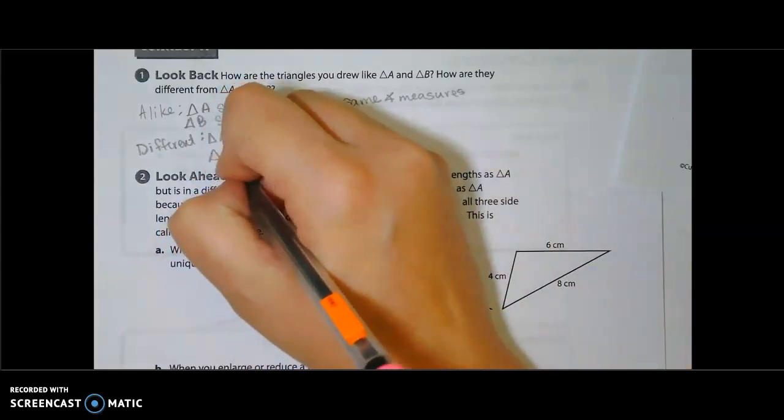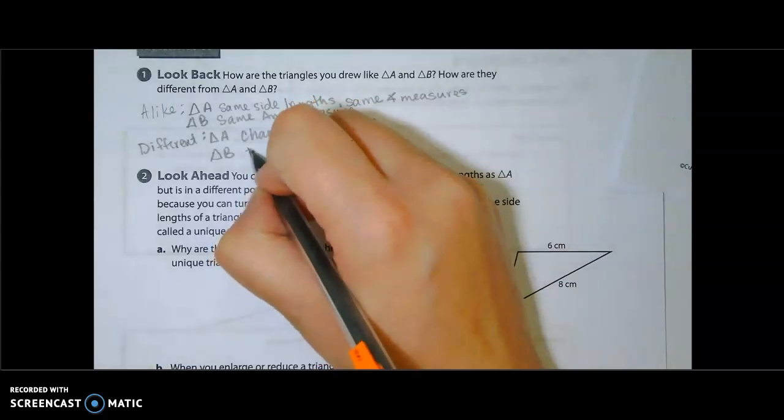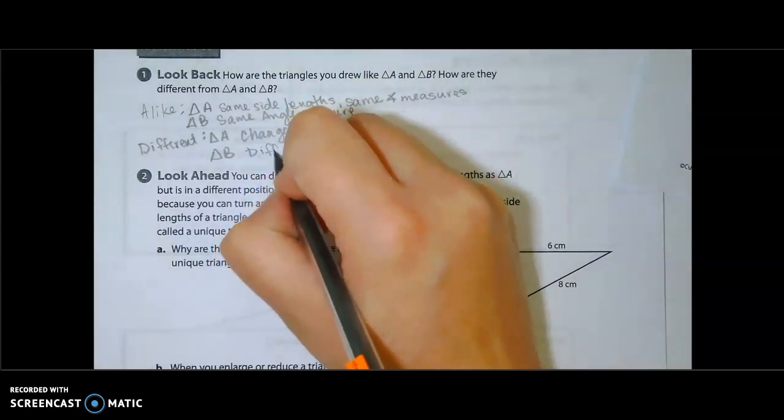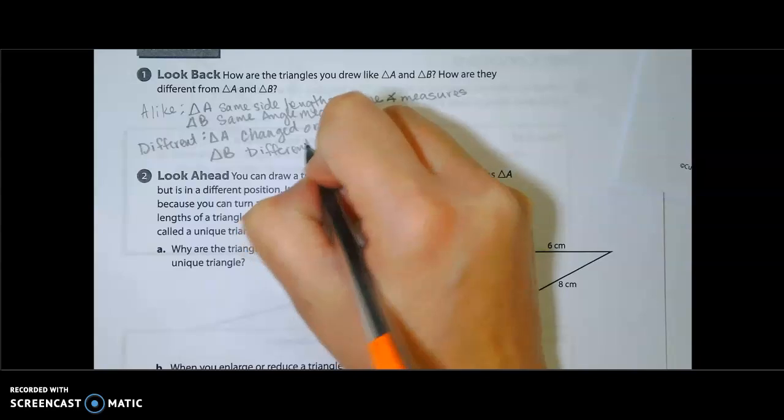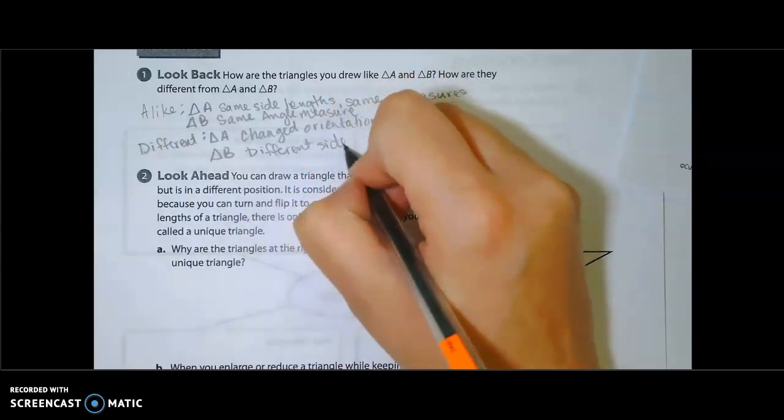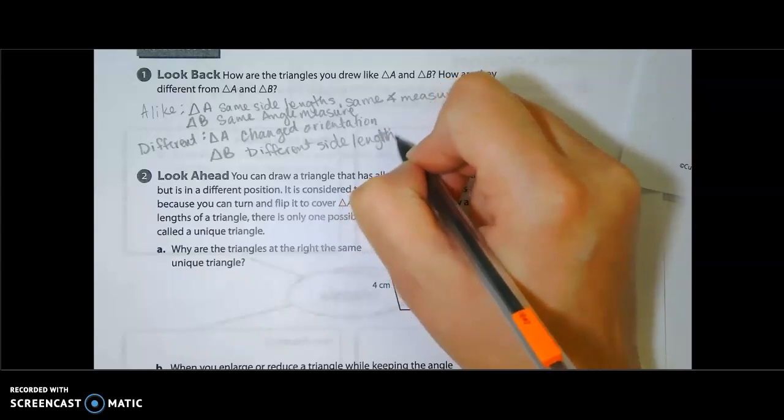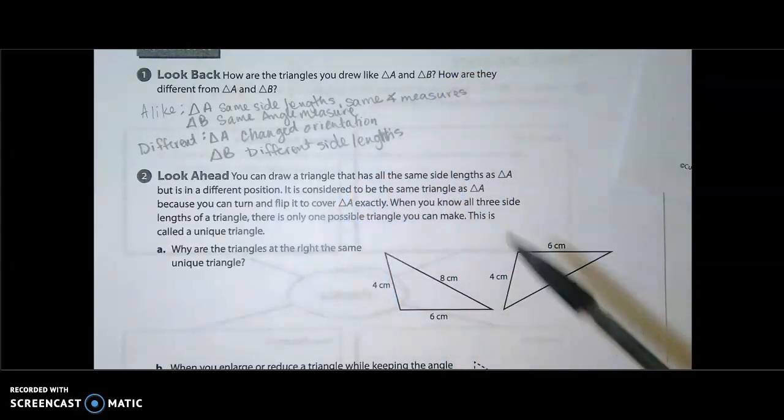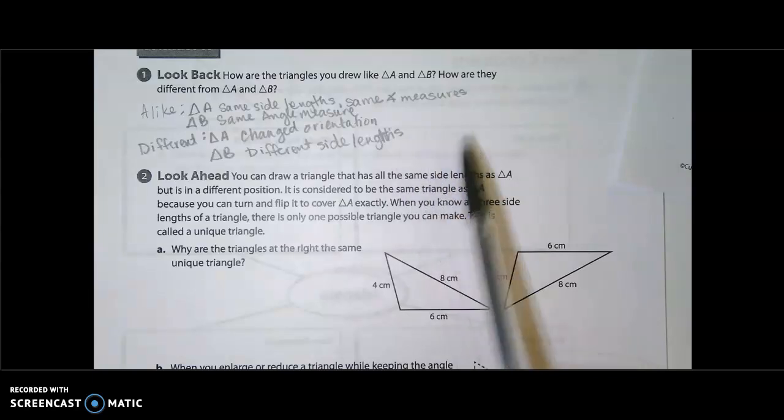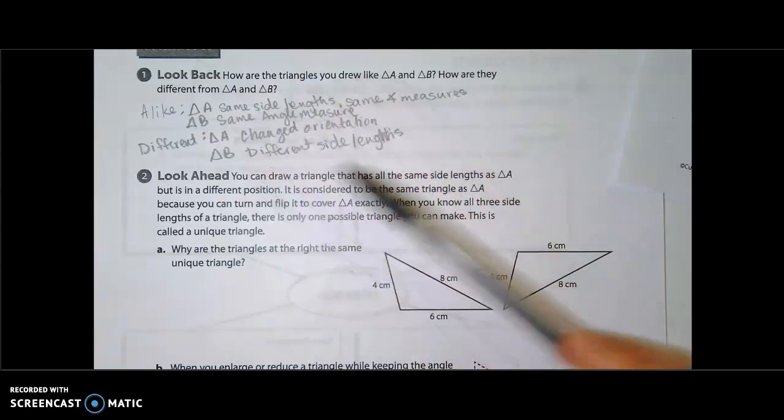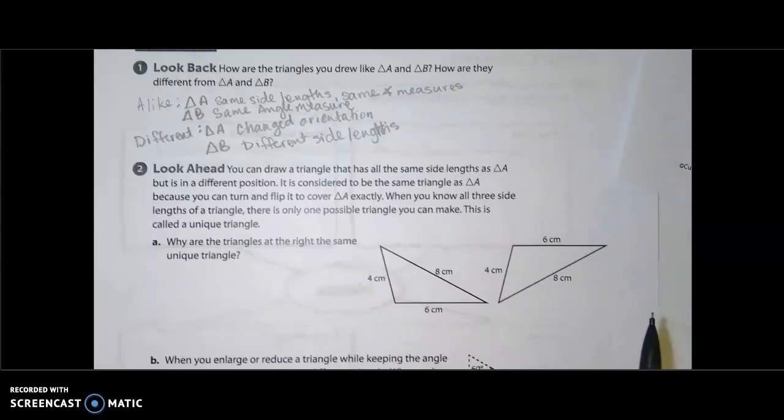When it came to triangle B, some of us had different side lengths. Along with maybe changing orientation, so you could add the change orientation. But that's how our triangles were alike and how they were different from the original triangles given to us.